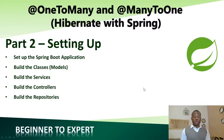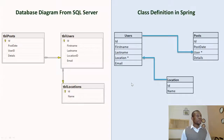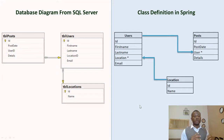Today we continue with tutorial 2, part 2 of our one-to-many and many-to-one relationship in Spring Boot using Hibernate. Today we are going to be setting up everything we need — the application, the classes, the services, the controllers, and the repositories. I'm going to be fast because setting up is not the key point. I will get to the main point, which is the relationship among the entities.